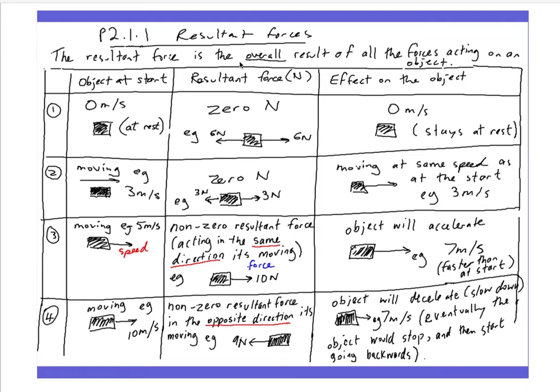The resultant force is the overall result of all the forces acting on an object. This table here shows general scenarios which will help you solve most problems to do with resultant forces. In an exam it will often tell you what the object is doing at the start, what the resultant force is acting on the object, and then you need to see what the effect on the object will be.